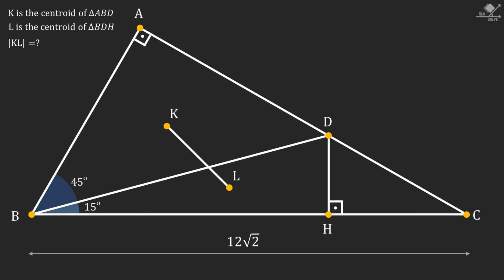Point K and point L are the centroids of triangles ABD and BDH respectively. For the given angles and lengths, we need to find the length of the line segment KL.